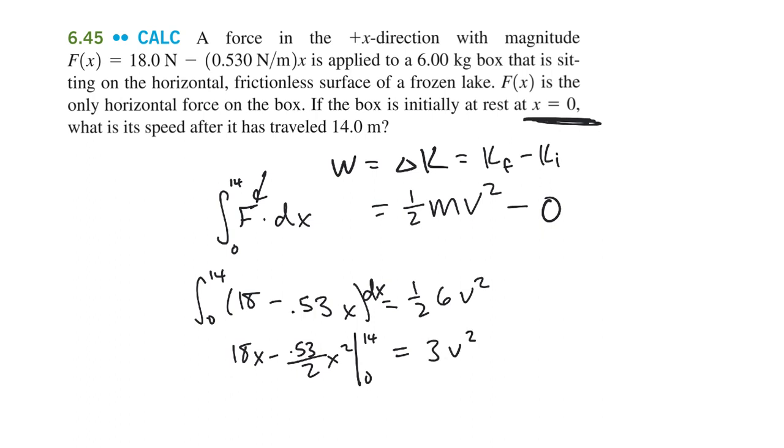So we've got to plug 14 into this stuff and 0, but 0 is going to cancel out the whole term down there. So we've got 14 times 18, or 18 times 14, minus 0.53 over 2 times 14 squared equals 3v squared, which comes out to be 200.06 equals 3v squared divided by 3.